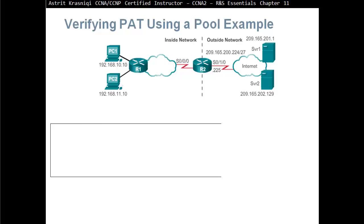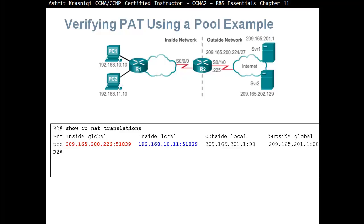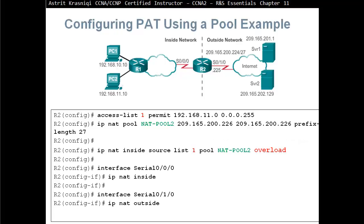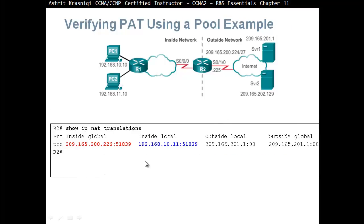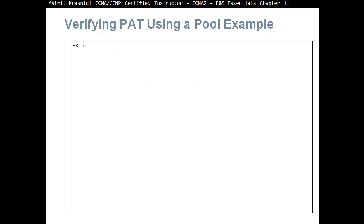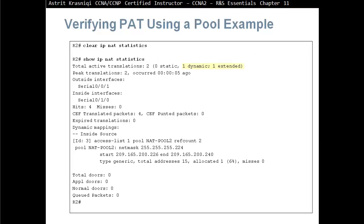To verify PAT using a pool example, we run 'show IP NAT translations' and can see that an IP address with a given port number has been translated to another address with a port number. The router tries to keep port numbers the same, but if a collision occurs, it assigns a different port. We also run 'clear IP NAT statistics' then 'show IP NAT statistics' to confirm one dynamic NAT and one extended entry, with one address allocated from the pool.